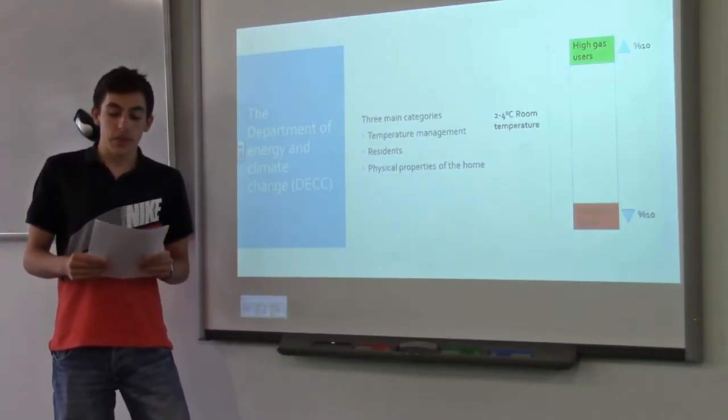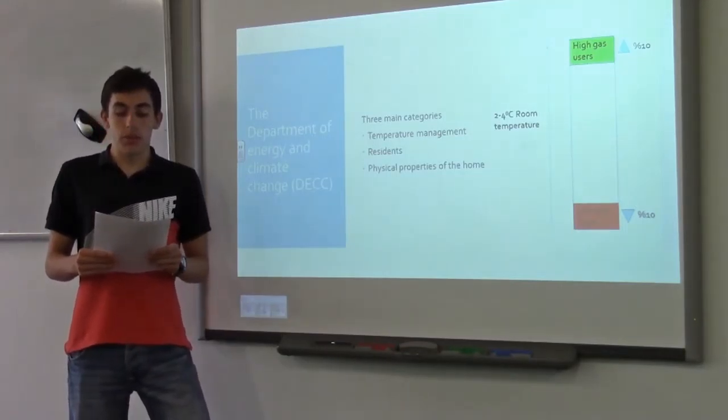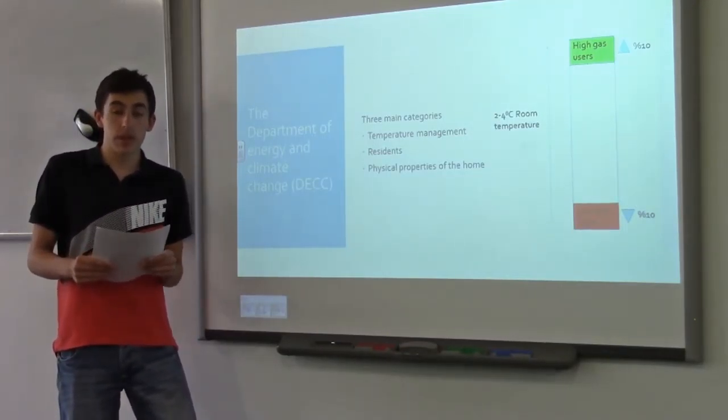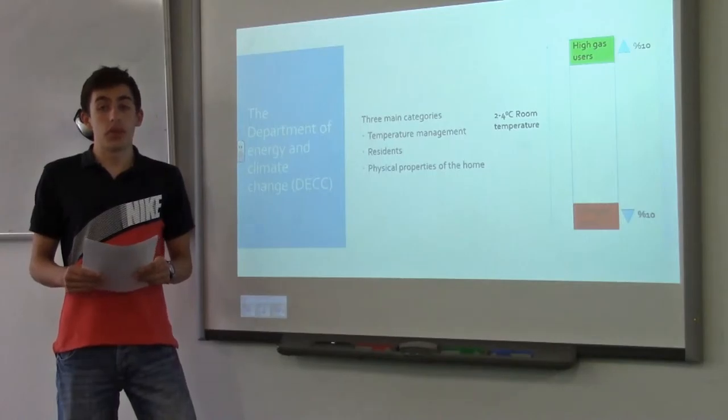High gas users, on average, showed generally higher temperatures in the household compared to low gas users, with room temperatures differing between two to four degrees centigrade.